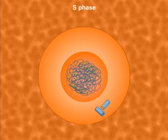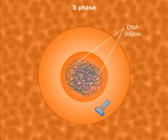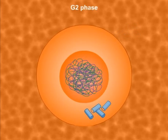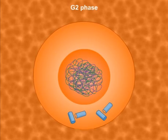In synthesis phase, only the amount of DNA doubles, but the number of chromosomes remains the same. This is very important. This S phase is followed by a G2 phase. During G2 phase, the protein synthesis occurs and the cell continues to grow.